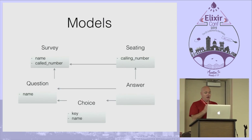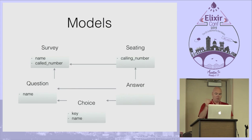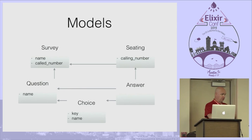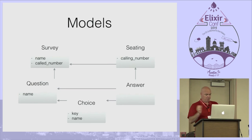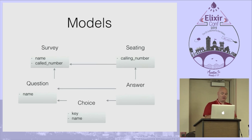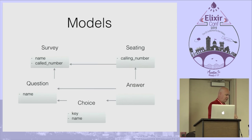Pretty simple data model here. We have a Survey model — basically has the name of the survey which gets read out, and then the number that's called in to activate that survey, so you can program different numbers and it'll pick the survey based on what number they called. Then a Question with a name; a Choice which belongs to the question, and you program the digit they'll press to respond to that choice; an Answer when they take the survey; and a Seating — the model I chose to represent someone sitting down and taking the survey, where we'll know what number they called from.